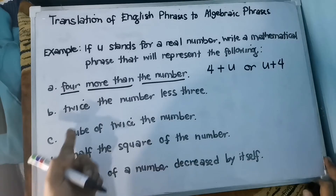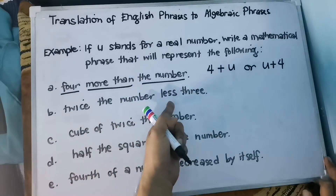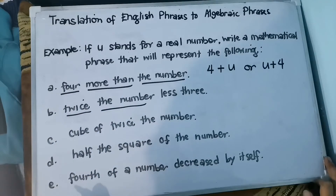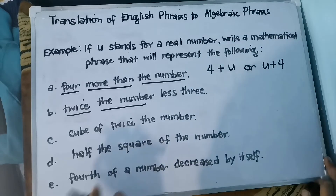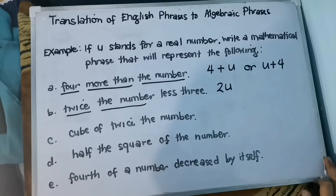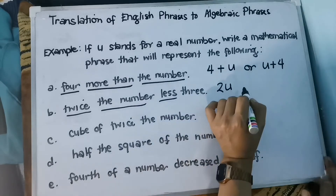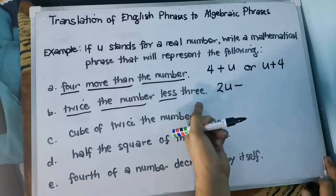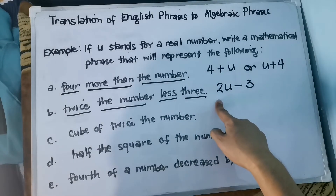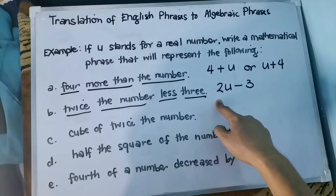For letter B, we have: twice the number, less 3. Twice the number involves multiplication, so we write it as 2u. Then less involves subtraction, giving us 2u − 3.